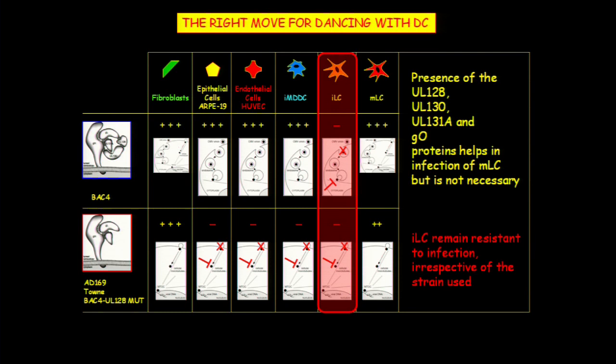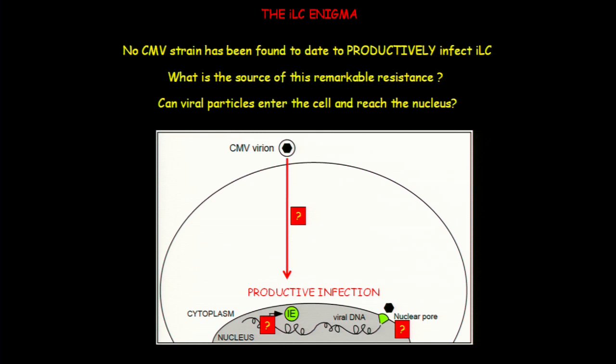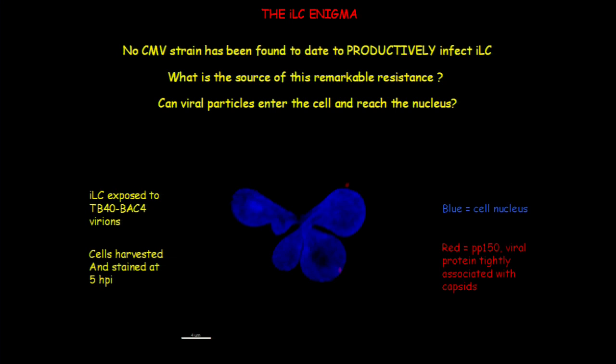So far we could not find any strain capable of infecting immature LC. We don't know the source of this remarkable resistance or whether the virus can actually reach the nucleus. What we are working on now is trying to figure out where the virus gets stuck. In very preliminary data, we stained these cells with Herx as well as with PP150, a protein that remains tightly associated with capsids. We can see viral particles very close to the nucleus, and another that has already reached the nucleus. So at five hours post-infection, the virus can actually get in and reach the nucleus, meaning that the entry pathways are not the problem in this cell type. We are now interested in determining what the actual block is.